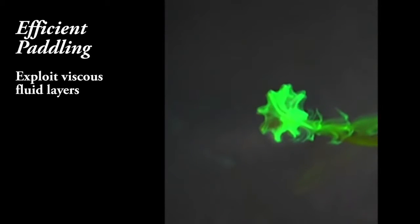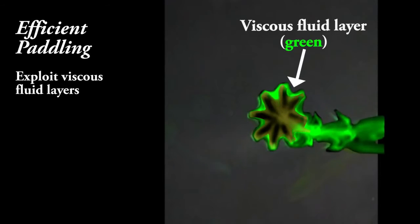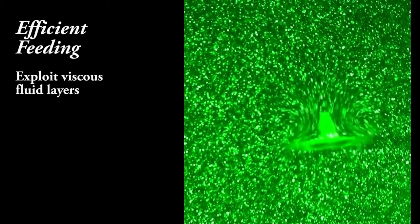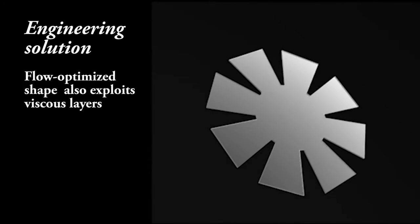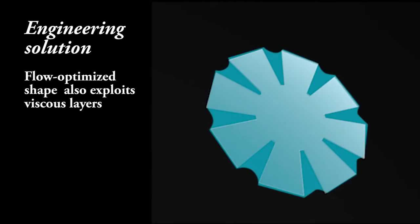One such design principle is the recruitment of viscous fluid layers that attach to all swimmers, but jellyfish exploit them for paddling and prey capture. The engineered jellyfish also exploits viscous fluid layers because we optimize its shape to the flow conditions.